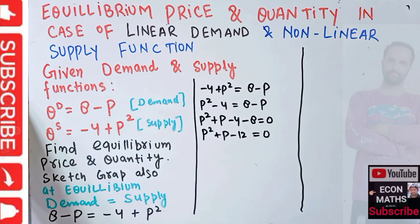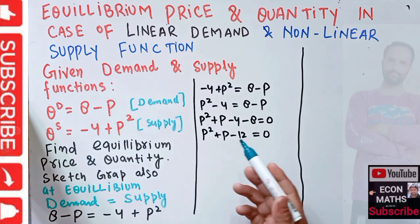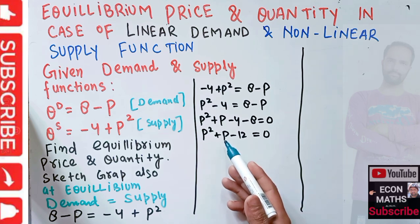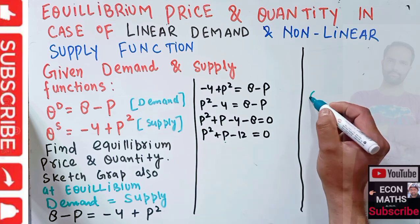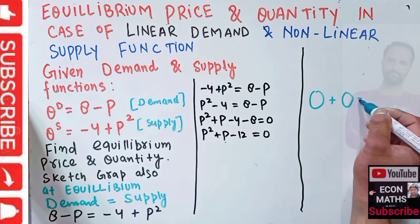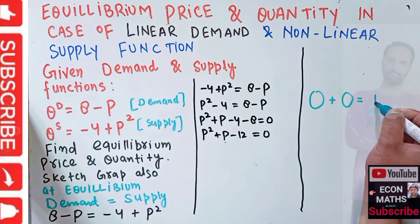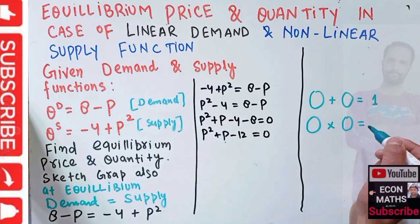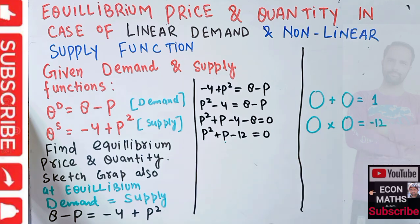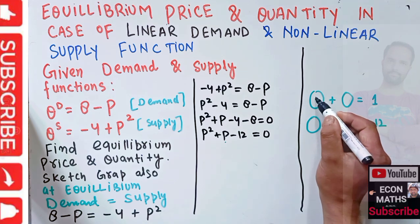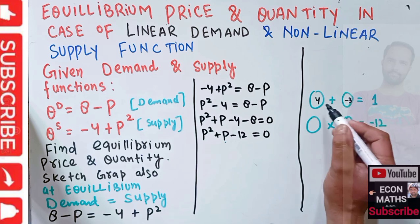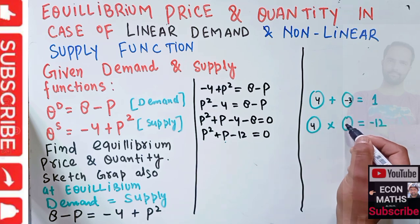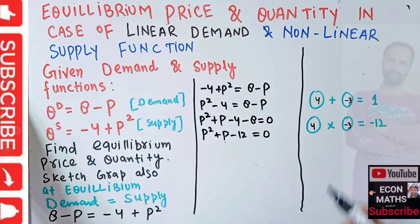We can split the middle term. The middle term is P and its coefficient is 1, so we need two numbers whose sum is 1 and whose product equals the constant term, -12. Using 4 and -3: 4 + (-3) = 1 and 4 × (-3) = -12, so both conditions are satisfied.